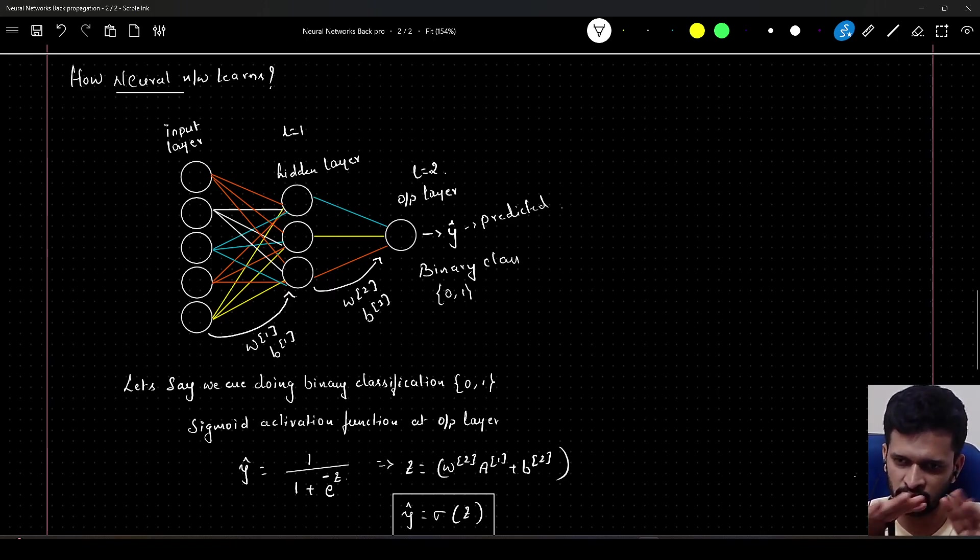If this is not clear, please refer to my previous video where I have explained the forward propagation of a neural network, passing the input features from input layer till the output layer, and all the computations involved during that forward pass. Coming to this discussion now, let us say we are training this neural network to classify between two classes, either 0 or 1.